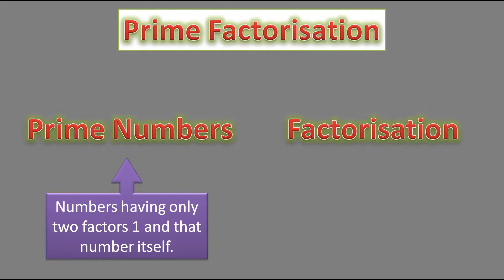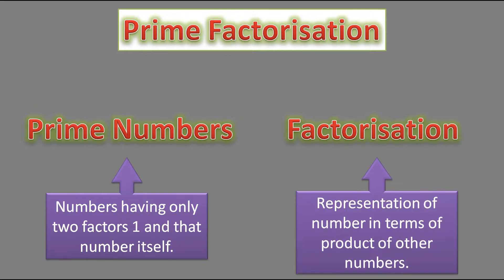Factorization means the representation of a number in terms of the product of other numbers. For example, let's take 16. We can represent 16 as 8 times 2, since the product of 8 and 2 gives 16. We can also express it as 4 times 4. Such a representation of a number is called factorization.